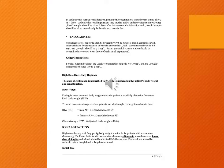For endocarditis, gentamicin dose 1 milligram per kg ideal body weight every eight to twelve hours is used in combination with other antibiotics. Peak concentration should be 3 to 5 milligrams per litre and trough should be less than 1 mg per litre. Patients with creatinine clearance less than 20 should receive a lower dose of 3 milligrams per kg, and a level should be checked 24 hours later. Further doses should be withheld until a trough level less than 1 mg per litre is achieved.